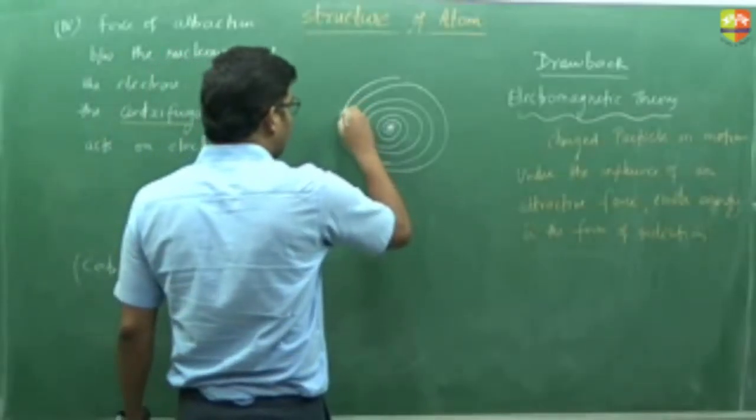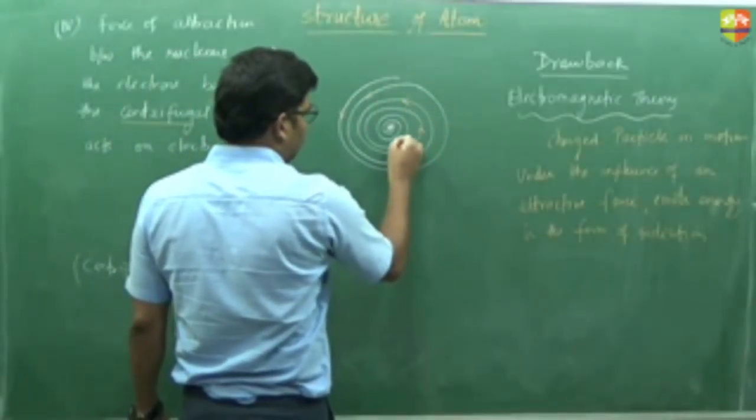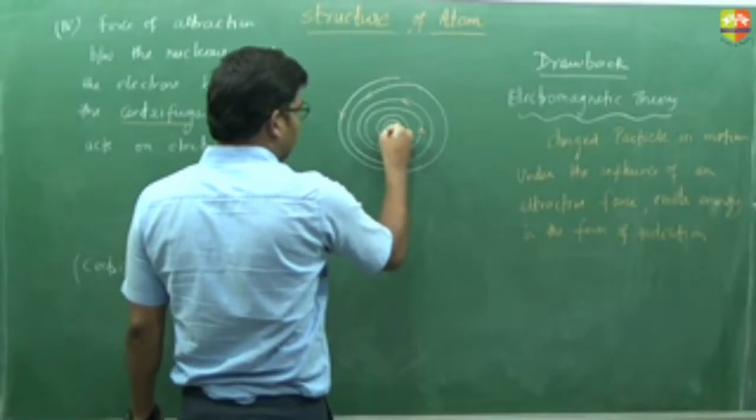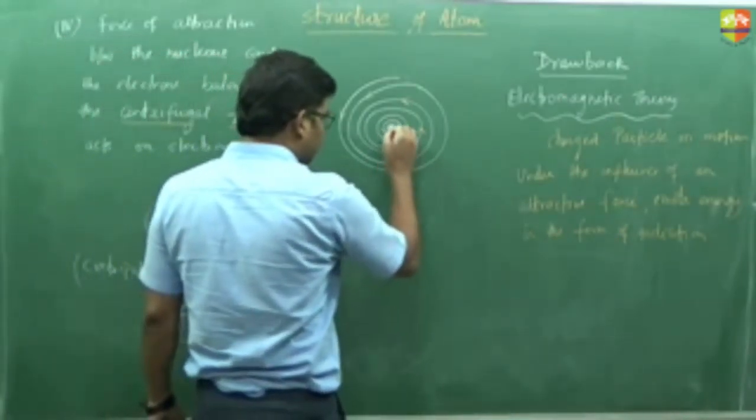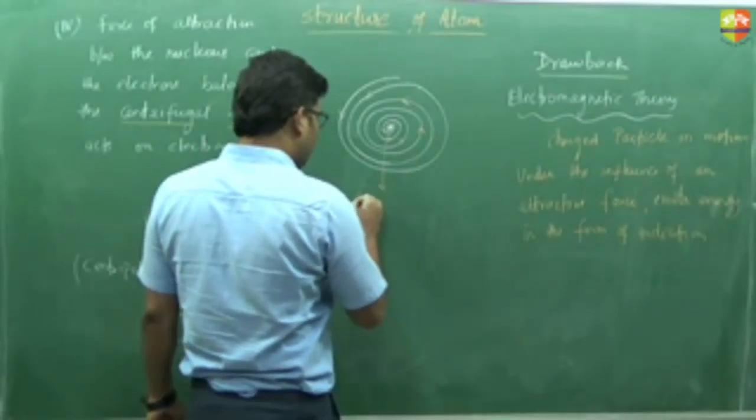Like this the electron is moving in every path, and then it falls down into the nucleus, which makes then atom falls in the nucleus.